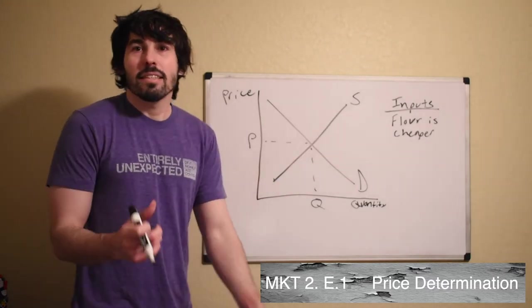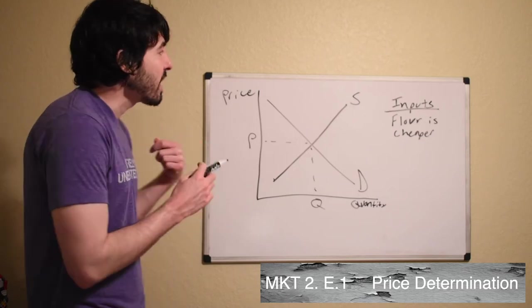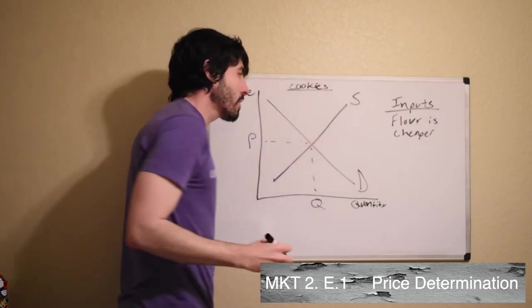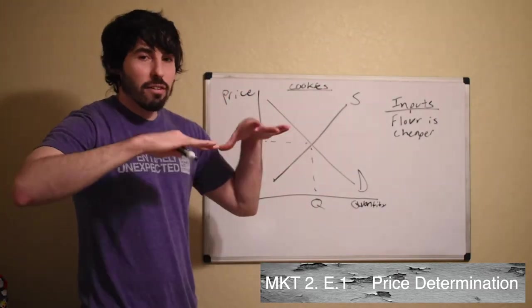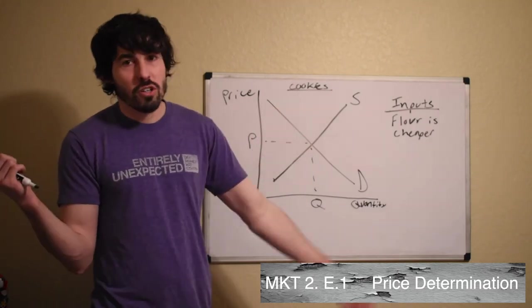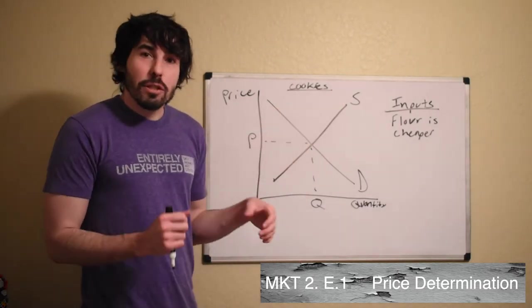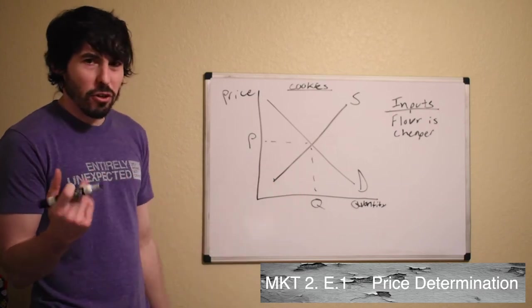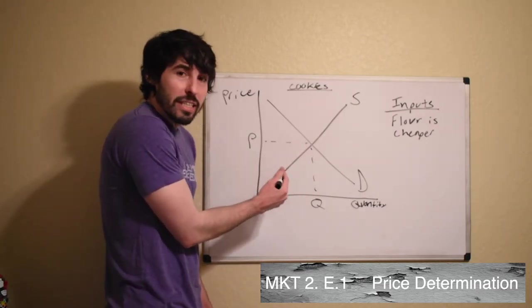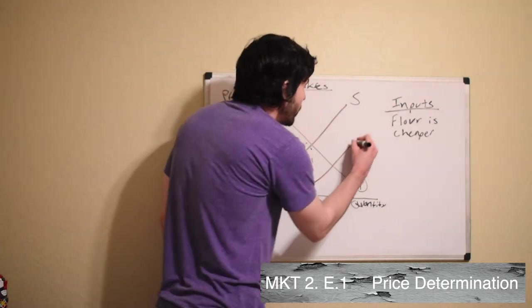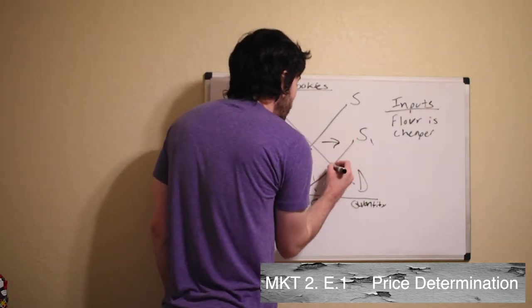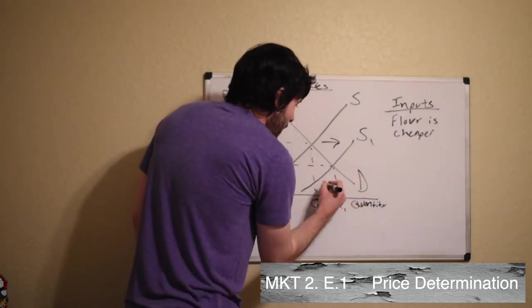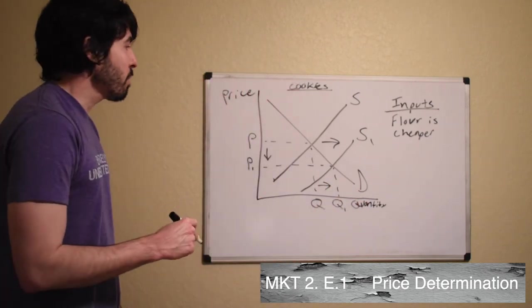So first off, an input price is something that you have to pay. So it's the cost of producing an item. I'm going to keep making this cookies. And the way cookies are related to flour, if flour is now cheaper, you need to think, is it easier to produce cookies or harder? Well, you use flour to make cookies. It's cheaper to get flour now. So now for the same amount of money, I can produce more cookies if I'm a cookie manufacturer. So the supply is going to increase for cookies. And so the supply curve is going to shift to the left. Here we have S1. Our price has decreased. And our quantity demanded and quantity supplied has increased.